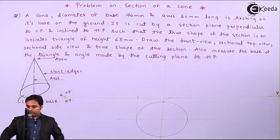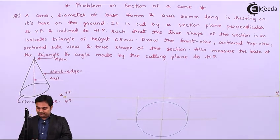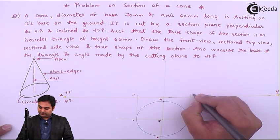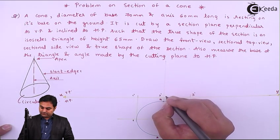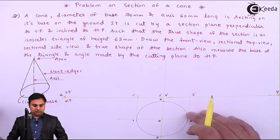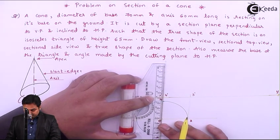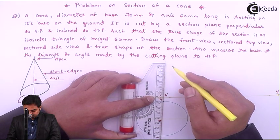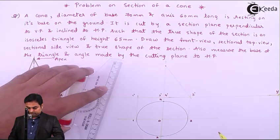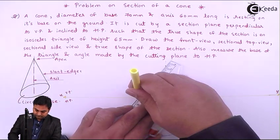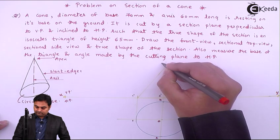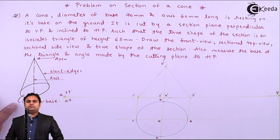Now getting the front view. Here I will give the notation: this point is 1', here we have 3', this is 2', 4', and here there is the apex. The axis is 60 mm long so measuring 60 mm. This is the front view of the cone — I'll keep it light because until we know the location of the section plane we cannot make it dark.